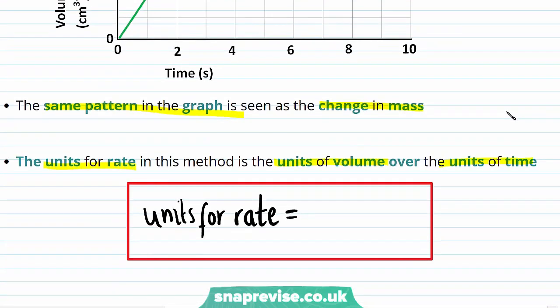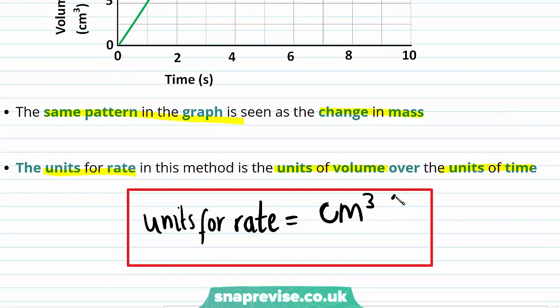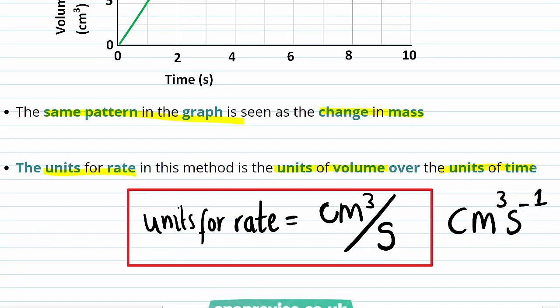Therefore, the units for rate equal the units of volume, which is centimeters cubed, divided by the units of time, which is seconds. And again, you might see this written as centimeters cubed per second, where per second has been written as s to the minus one.